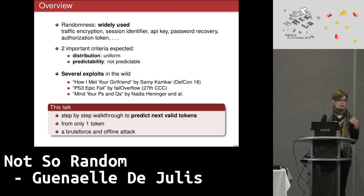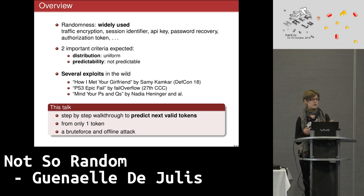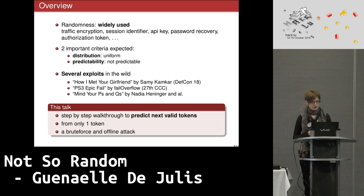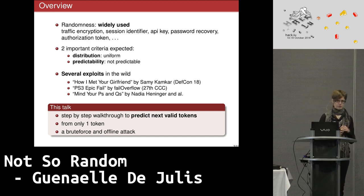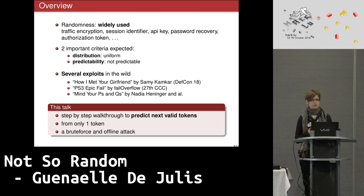For our generator, we will expect two main criteria, two main properties. The first one is the distribution — we expect our random number to be uniform. We don't want to see any patterns that will be generated more often than others. And we also expect our numbers to not be predictable.